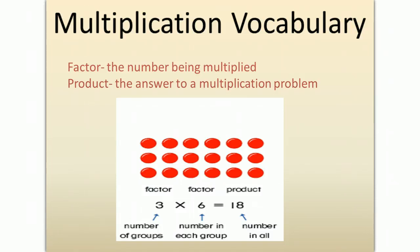When I multiply 3 times 6, I get 18. The product is the number in all. Here I have 3 rows with 6 circles in each row. The 3 is a factor. The 6 is a factor. They equal 18 red circles in all and that is the product.